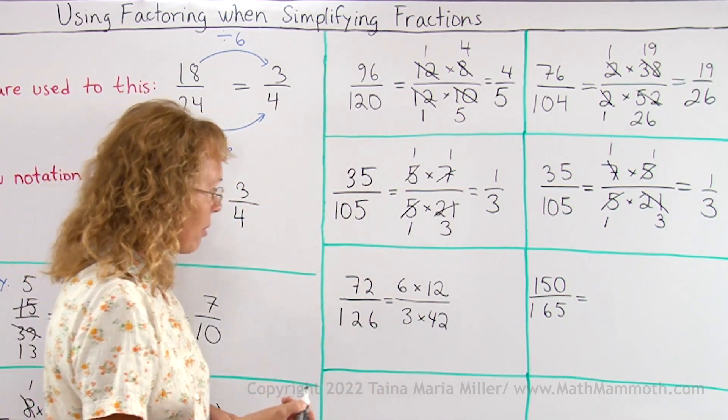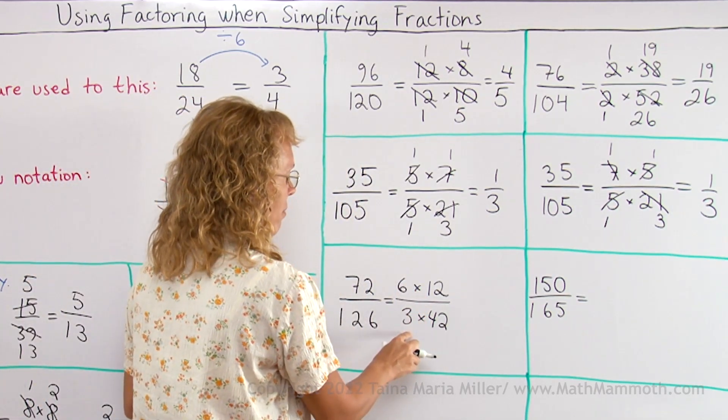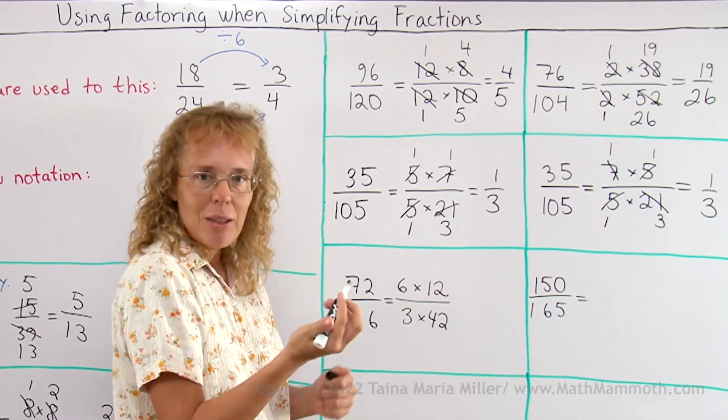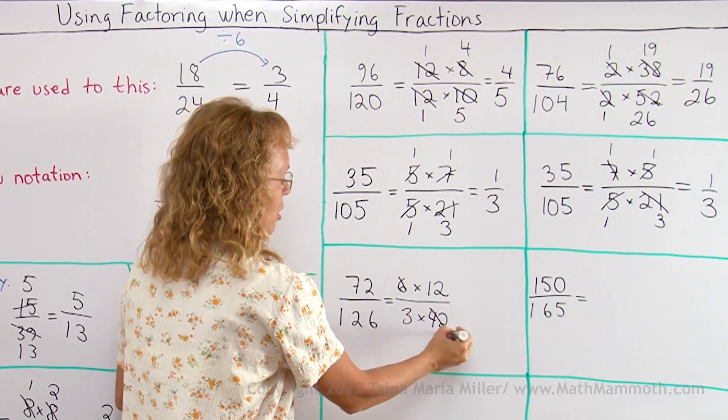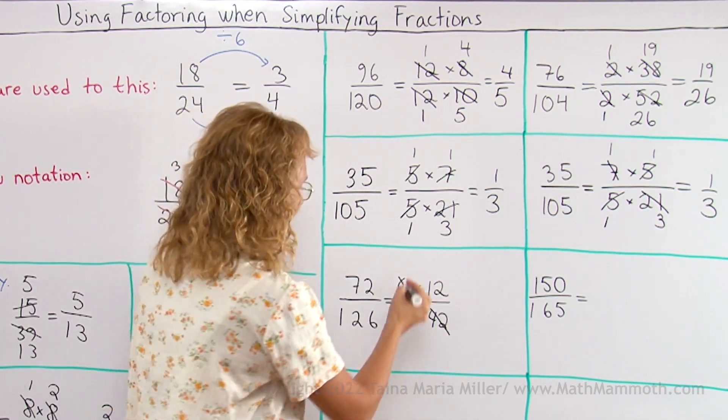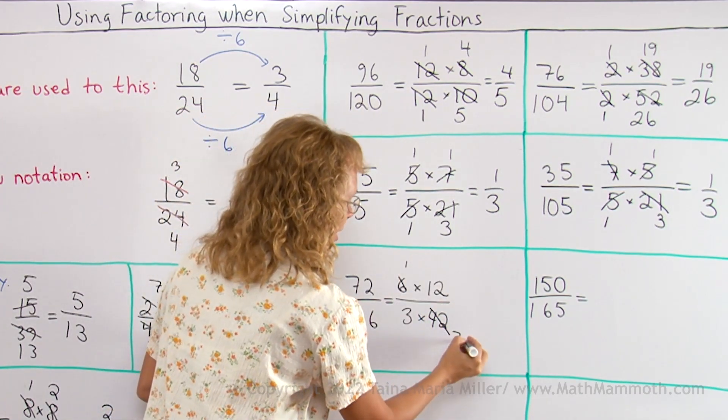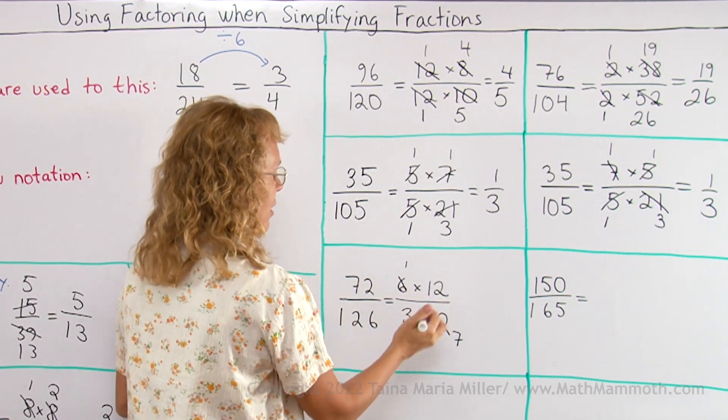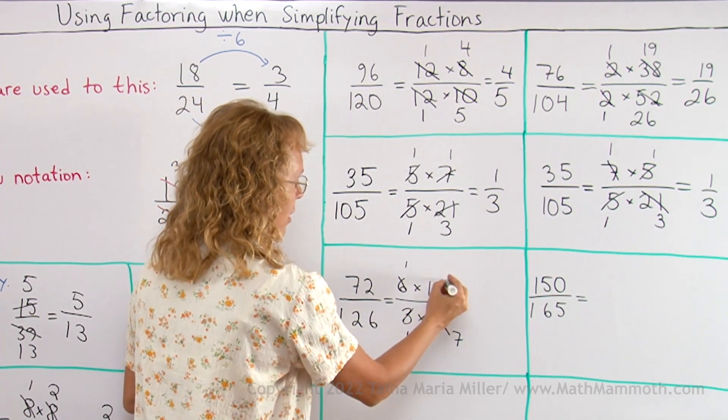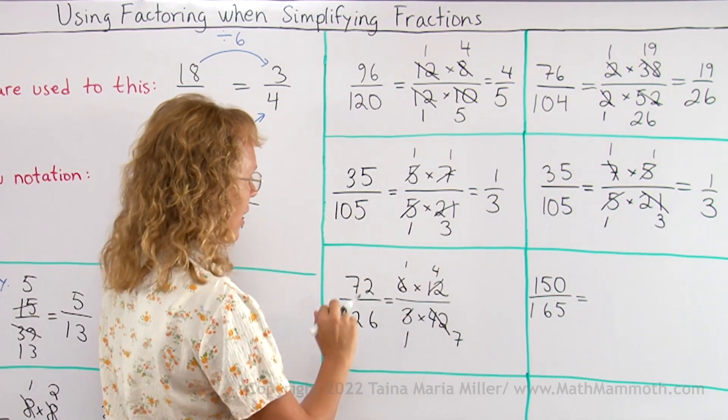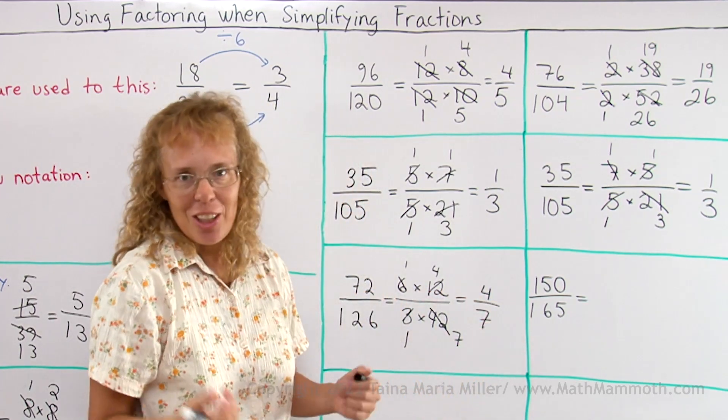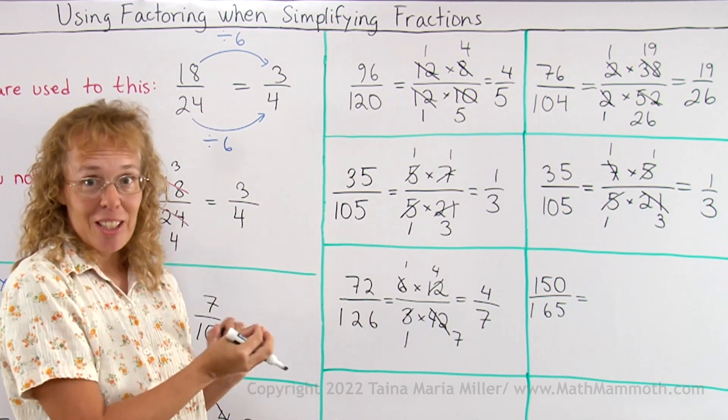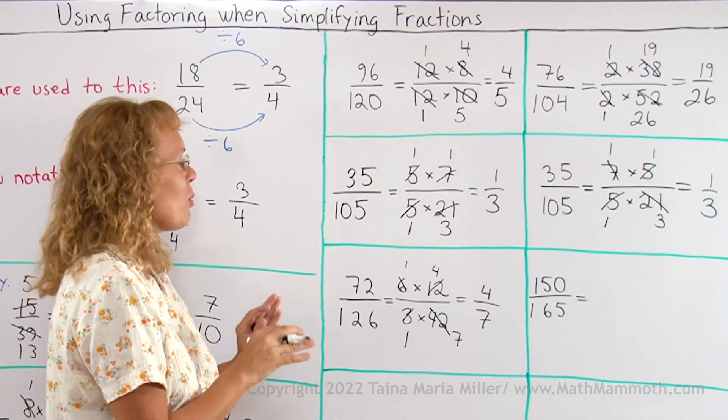And now I will simplify here. 6 and 3—oh I could simplify 3 and 12. There's many ways. Oh, 6 and 42. How about that one? 6 and 42 are both divisible by 6, so I get 1 here and 7 here. And then 3 and 12, both are divisible by 3. So I am left like that. I get 4 sevenths. But like you said, I could have simplified in some other manners too. The end result though will be the same.